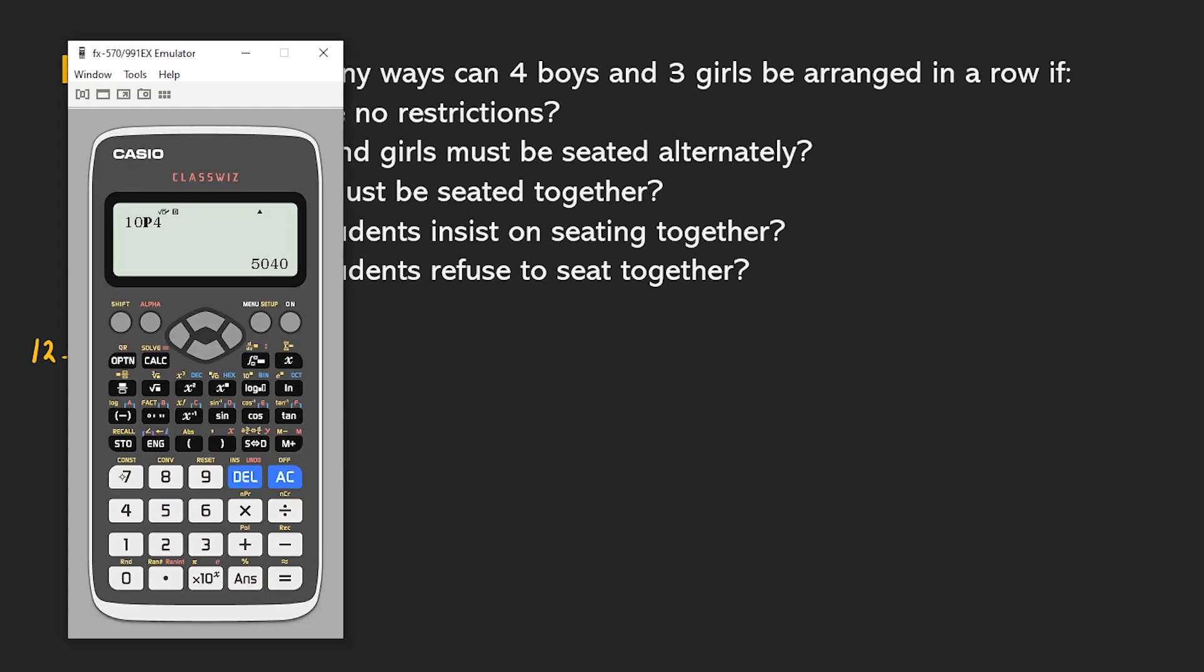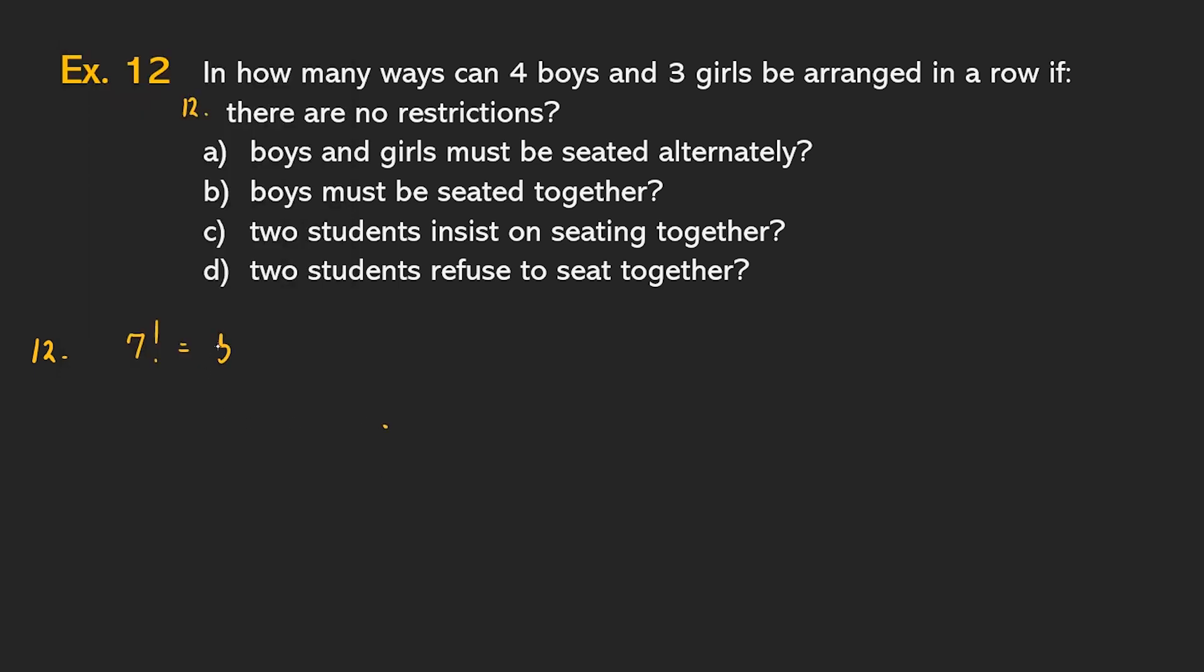If there will be no restrictions, then it's just seven factorial ways. Seven factorial is, let's confirm, I think it's 5,040. Yeah, it's 5,040 ways to arrange four and three.